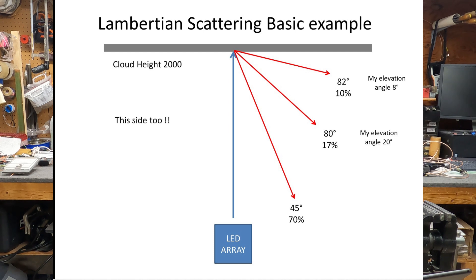I don't know how reflective that surface is — that's something I'd like to discuss with someone who knows physics or meteorology. As you move further away to 80 degrees off-axis from the incident ray, you end up with about 17% of the power incident on that cloud. At 80 degrees away, my elevation angle looking into the cloud is 20 degrees, and at 20 degrees elevation I am roughly two miles away.